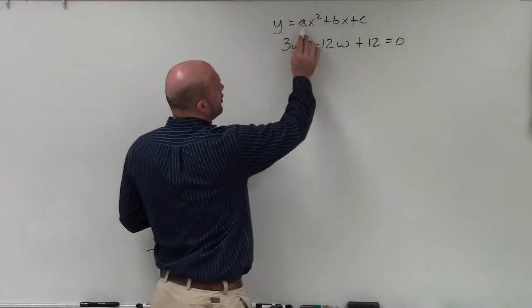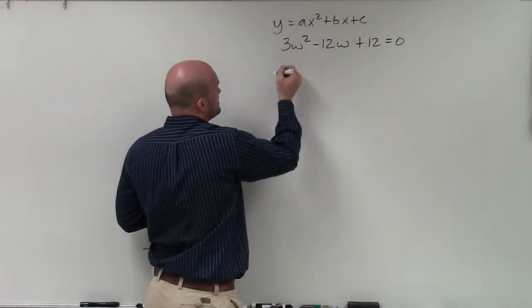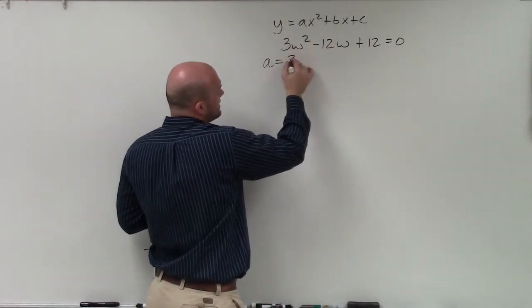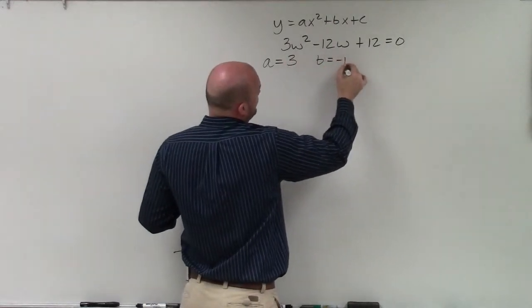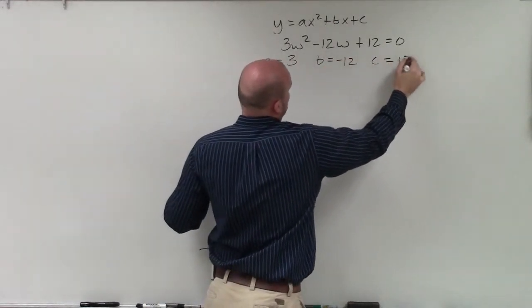Therefore, we can identify our coefficients and our constant a, b, and c. So in this case, the first thing I'm going to do is just label them. a = 3, b = -12, and c = 12.